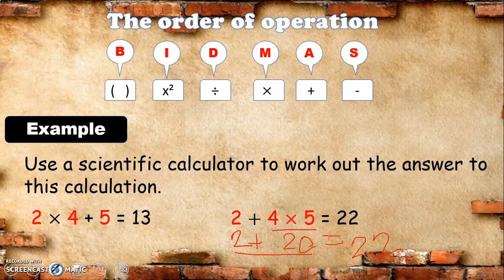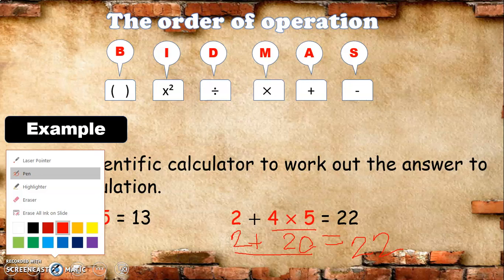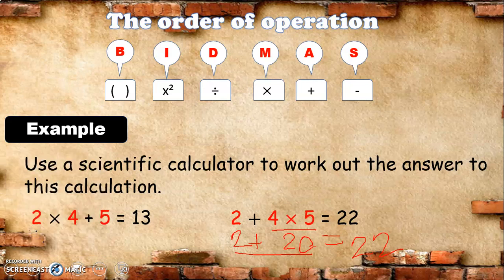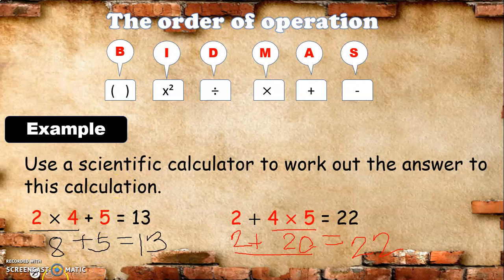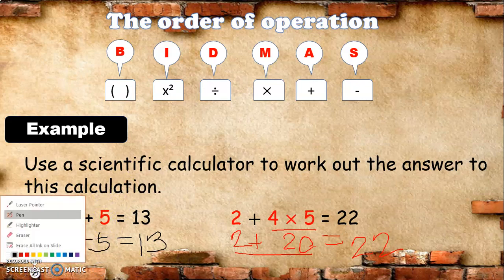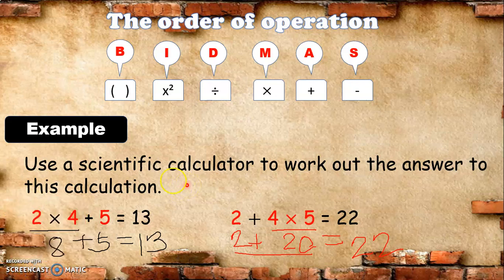Going back to the first example: 2 times 4 is equal to 8, and then add 5, so the answer is 13. If you use the scientific calculator, it gives you the same answer. But if you calculate manually, you must use BIDMAS in order to get the correct answer.